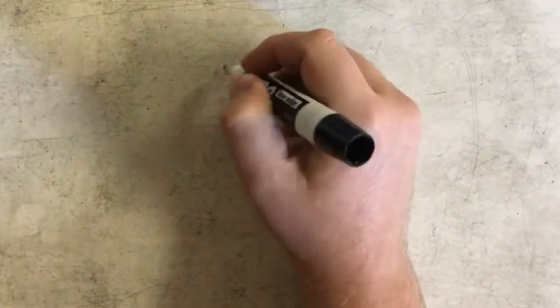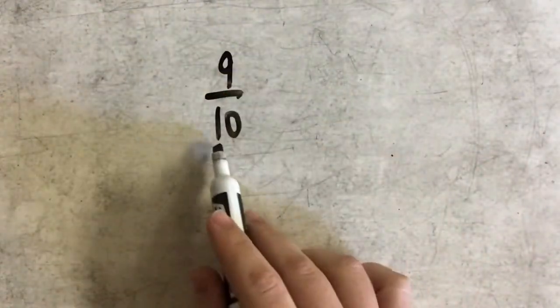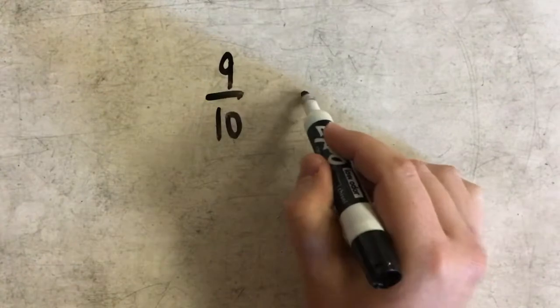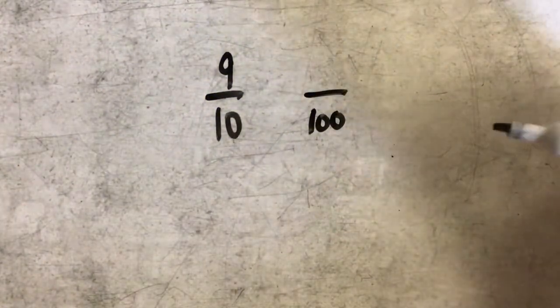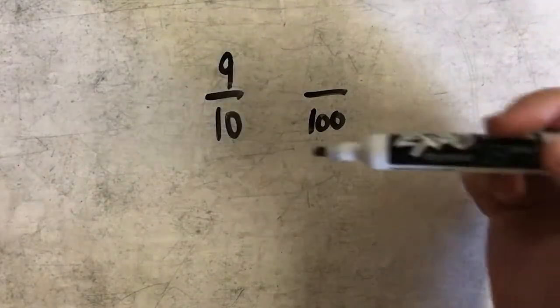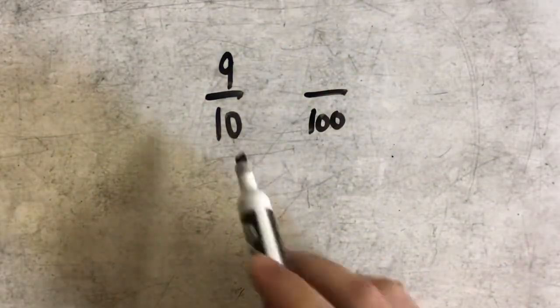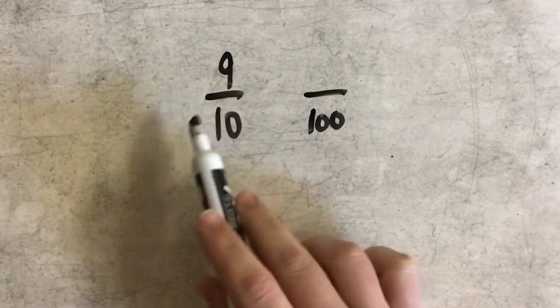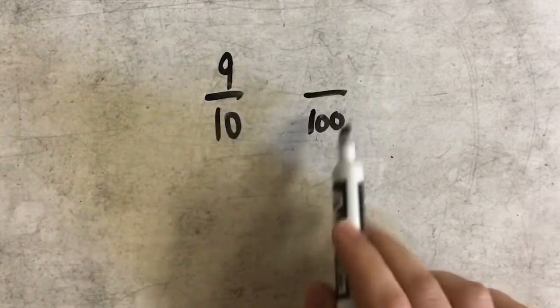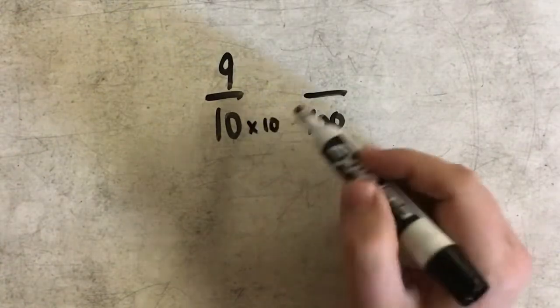So if I have a fraction here, let's say nine-tenths, and I want to change from tenths to hundredths. I know that I can write an equivalent fraction by multiplying the numerator and the denominator by the same number. So if I'm trying to get from tenths to hundredths, I'm going to look at what did I do to ten to get to one hundred. In order to get from ten to one hundred, I had to multiply ten by ten.